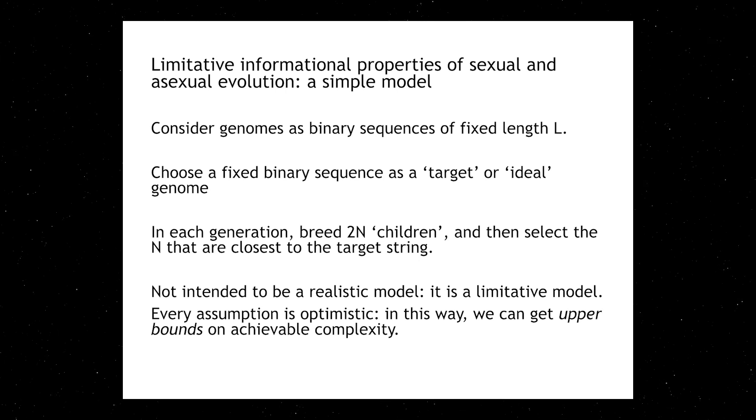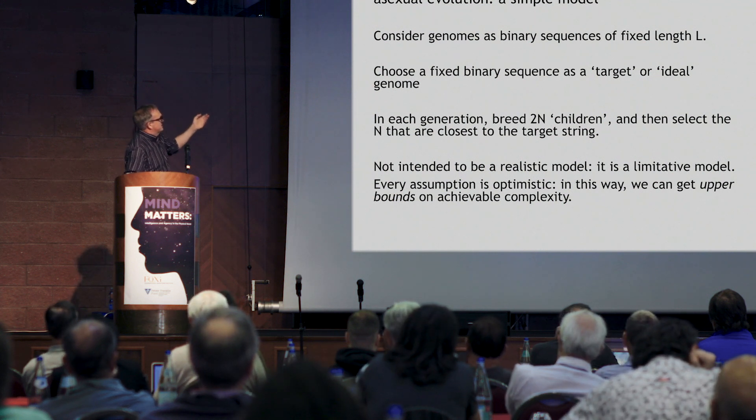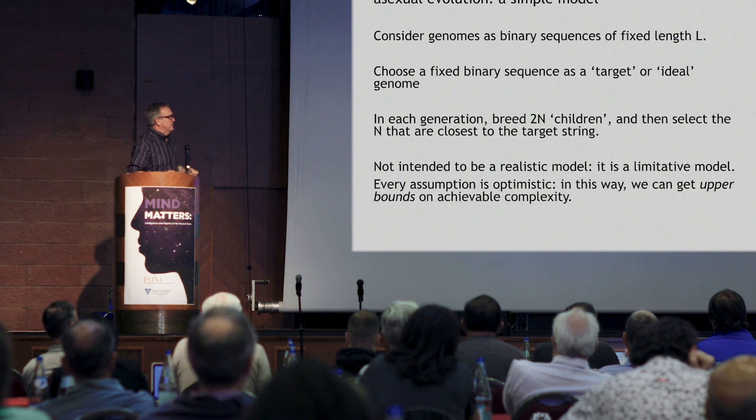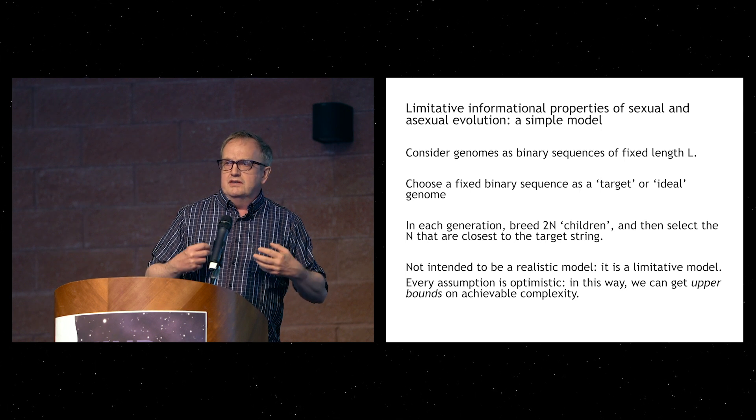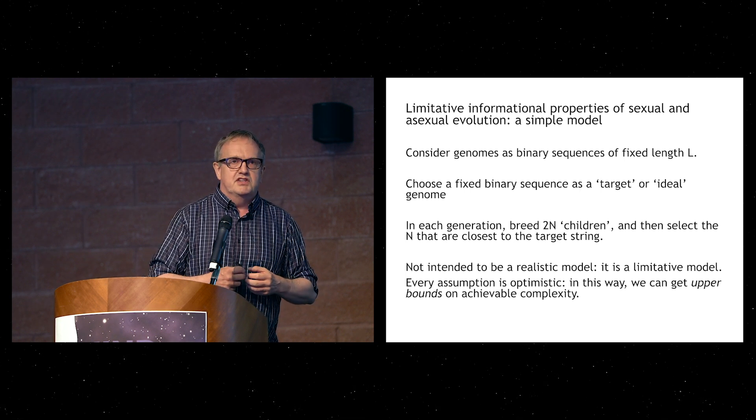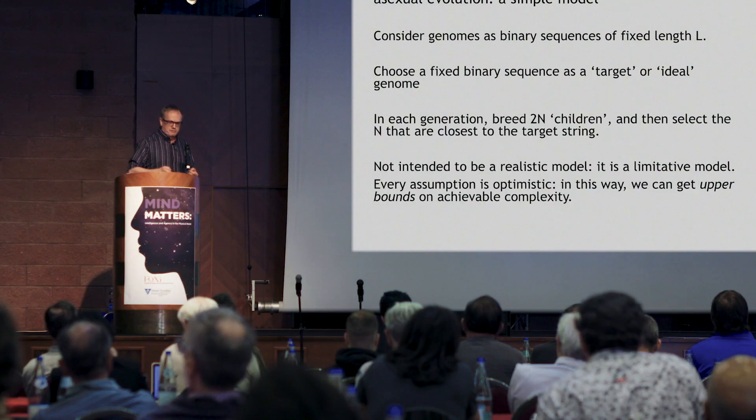Let's switch to abstraction. Think about the limitative informational properties of sexual and asexual evolution, considering a very simple model. This model is essentially the same one considered by many people — the clearest exposition was by David MacKay in his book on information theory. We consider genomes as binary sequences of some fixed length. We choose some fixed target or ideal genome. In each generation, we breed 2N children, and we select those which are closest — matching in the greatest number of places with the target. Every assumption is optimistic, giving us upper bounds on achievable complexity.